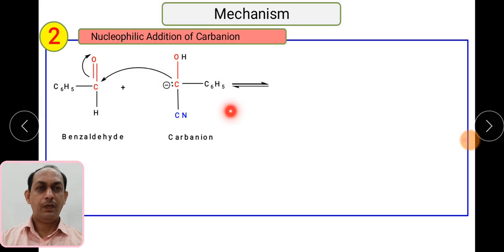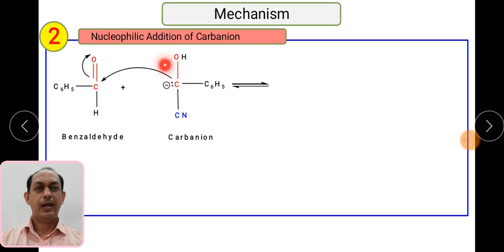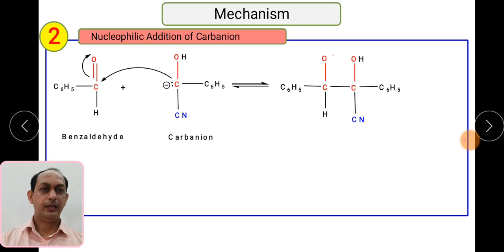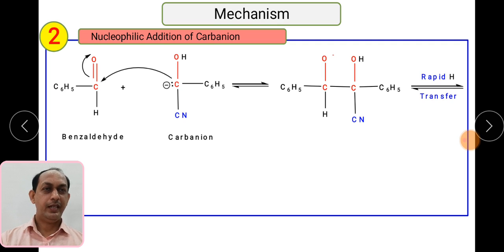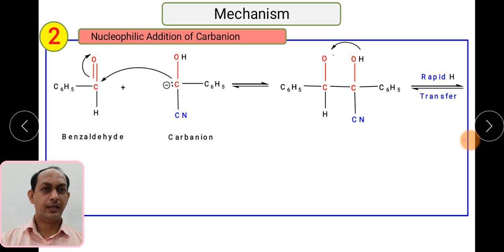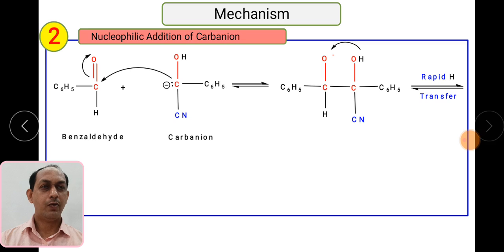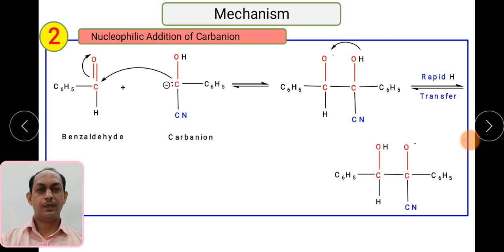In step two, the carbanion formed in step one attacks the second molecule of benzaldehyde. Again, the carbonyl carbon of the second molecule is electron deficient and the carbanion attacks it, forming a C–C bond between the first and second molecules. Once the attack takes place, the pi bond breaks and the oxygen of the second molecule carries a negative charge, forming an alkoxide intermediate. There is then another proton transfer — the H from the first oxygen migrates to the second oxygen, generating a new alkoxide species.